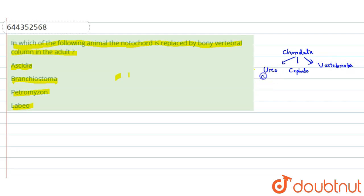So Urochordata and Cephalochordata are also in the group of Chordata. Chordates have notochord, so these are known as Chordata. All these three subphylum groups - Chordata is a phylum and these three are the subphyla - have notochord present.